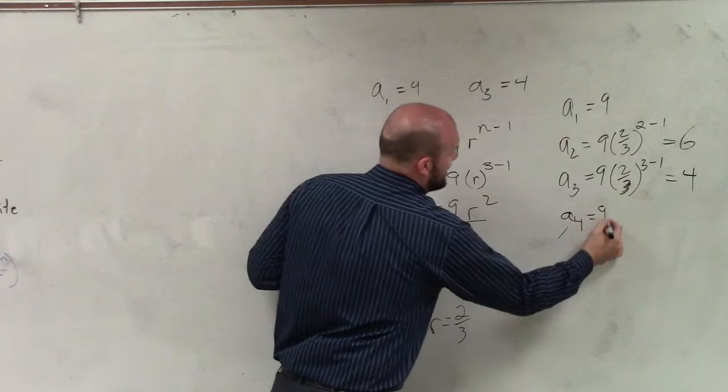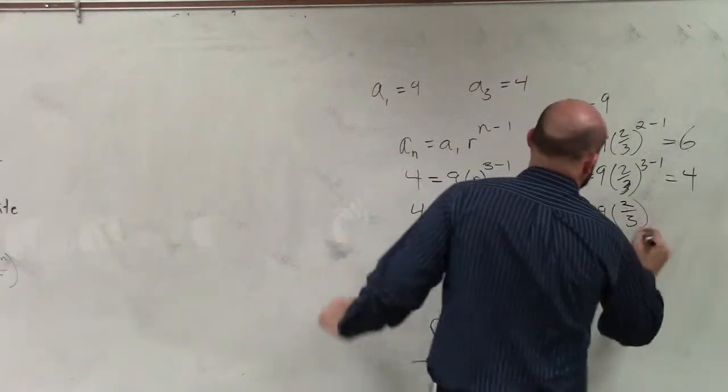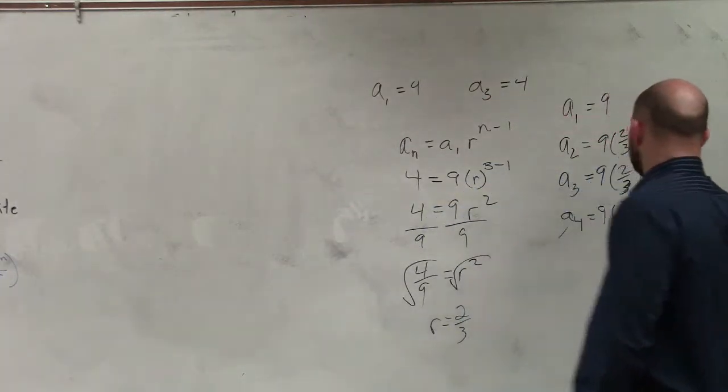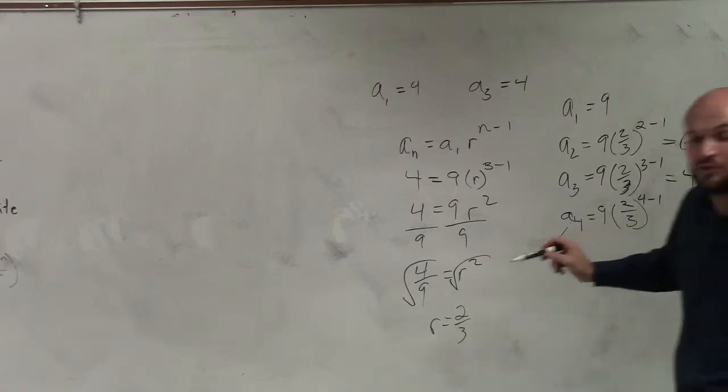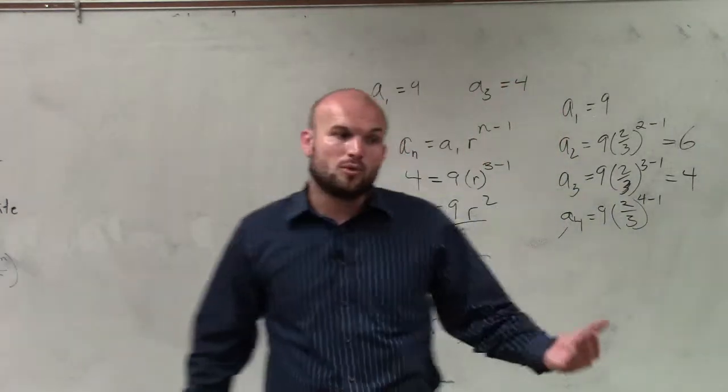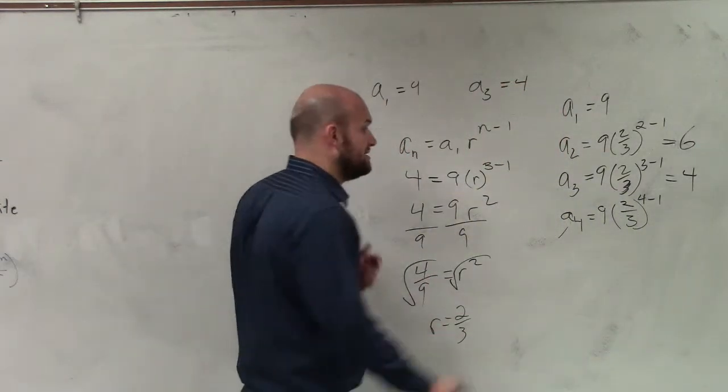a sub 4: 9 times 2 thirds raised to 4 minus 1. 4 minus 1 is 3. 2 thirds cubed is 8 over 27. Yes, 9 over 27 reduces to 1 third. 1 third times 8 is 8 thirds.